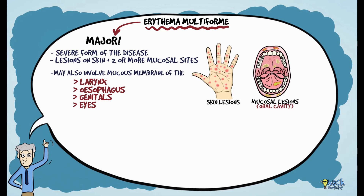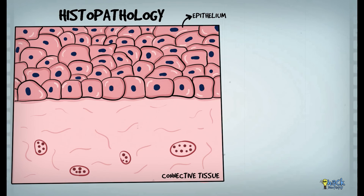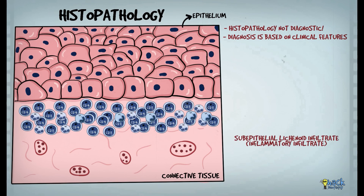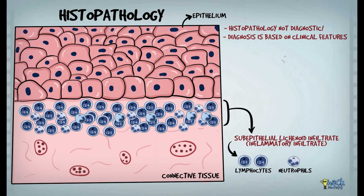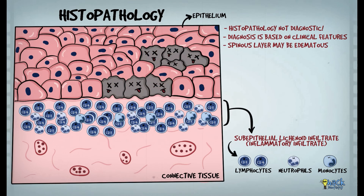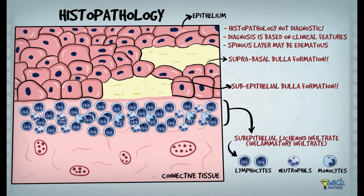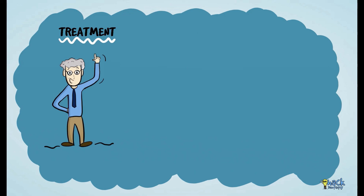The histopathology of erythema multiforme is not diagnostic and may resemble other vesiculobullous lesions; hence diagnosis is more often based on clinical features. There may be a subepithelial lichenoid infiltrate consisting of lymphocytes, neutrophils, and monocytes. The spinous layer may be edematous, and the epithelium may show necrosis in the basal and suprabasal regions, resulting in the formation of suprabasal as well as subepithelial bullae.